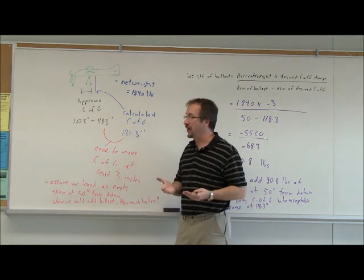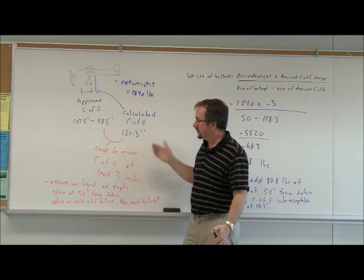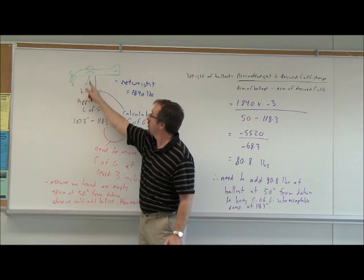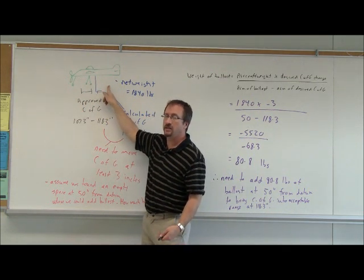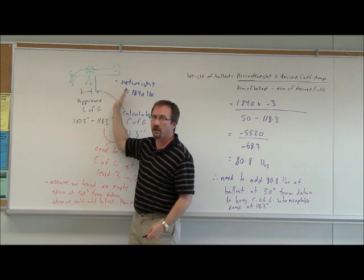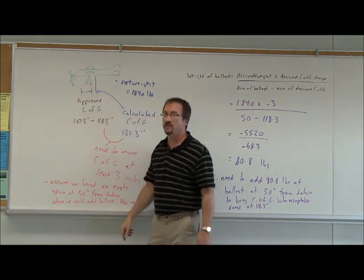What we need to do is add ballast. How do we do that? We're at 121.3 inches, past the center of gravity range. We have to bring it back three inches into the range, so we have to put some weight in front of the center of gravity, towards the nose.